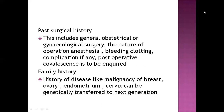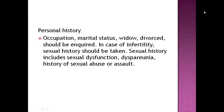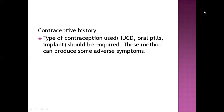Regarding gynecology, we mainly need to know what conditions women in the family have suffered from. Personal history includes occupation, marital status — and if married, divorced, or widowed, for how long. Sexual history should also be taken, covering sexual dysfunction, history of sexual abuse or assault, and how long it lasted. Contraceptive history is also important, as the choice of family planning method significantly impacts the reproductive health of the woman.